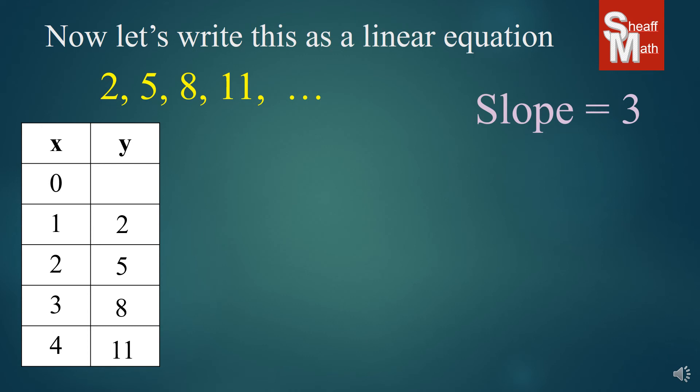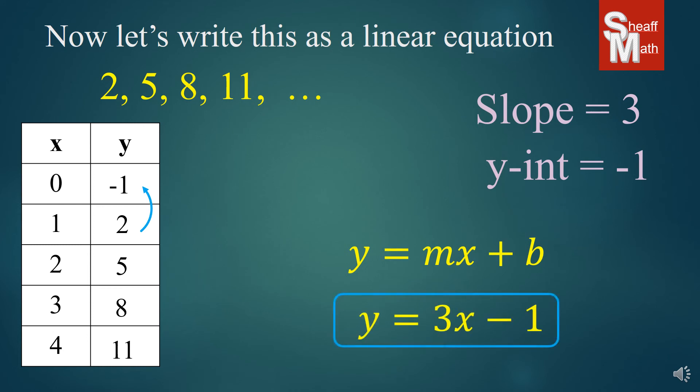Now, we're going to find our zero term. And so, we're going to do a reversal of that 3. So, we'll go down 3. And so, that makes negative 1. There's our y-intercept. And so, we are ready to make our equation. Y equals 3x minus 1.